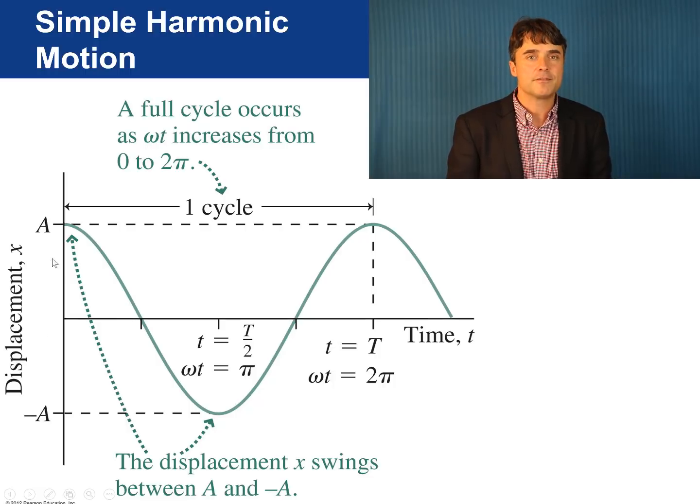In fact, it's half of the full range of distance that the mass travels because the mass goes from plus A down to minus A and then back. The time when the mass goes to minus A is at its leftmost position. It's such that omega times t at this time is pi. When the mass returns back to its original position of plus A, omega times t equals 2 pi.